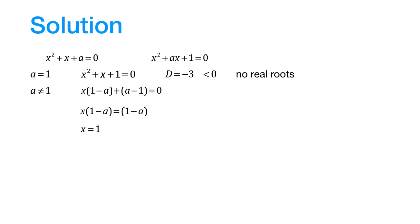Now cancelling out 1 minus A, we find that the common root is x equals 1. Now, when x is equal to 1, then the first equation becomes 1 plus 1 plus A equals 0, which means A is equal to minus 2, which belongs to this interval.